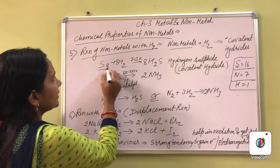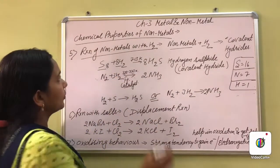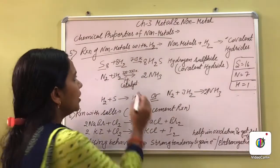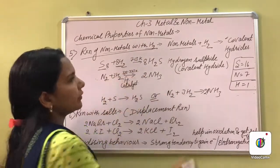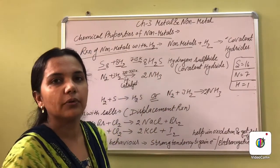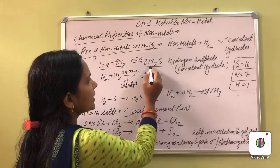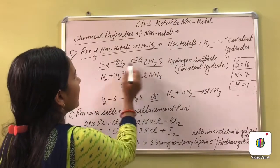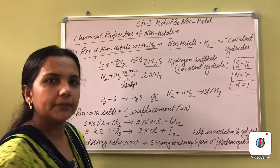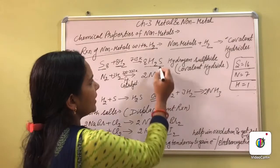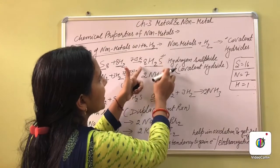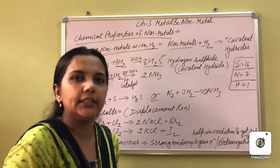Whenever sulfur reacts with hydrogen, it leads to the formation of hydrogen sulfide — H₂S. After balancing the equation, we put 8 here and 8 here. This is a covalent hydride — hydrogen sulfide is a covalent hydride.